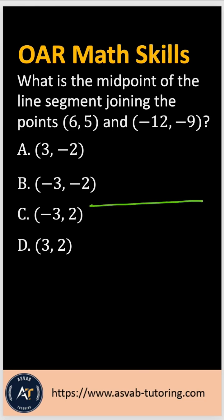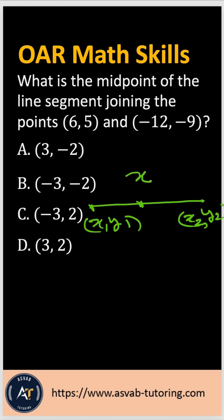Let me show you how to do it. Say this is a line — the coordinates are x1, y1 here and x2, y2 here. If you want to find the midpoint, which is (x, y), the formula is: the x-coordinate will be x1 plus x2 over 2.